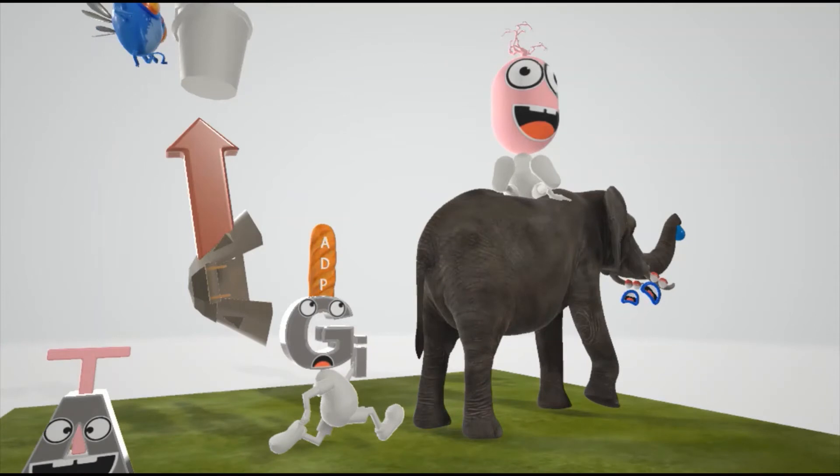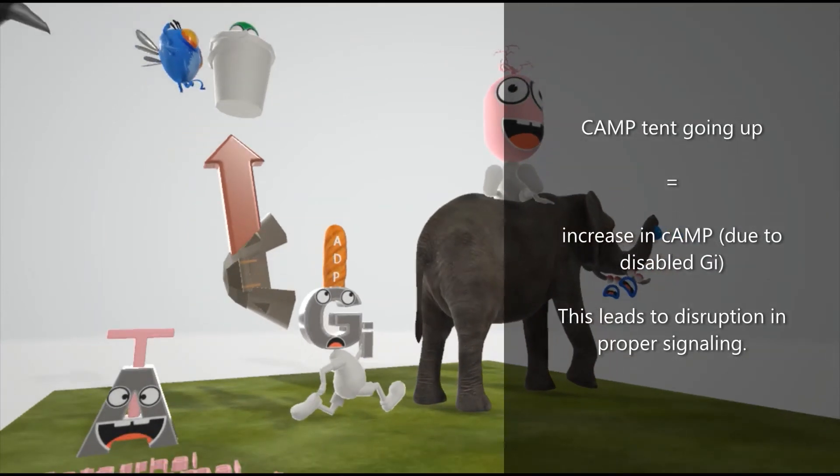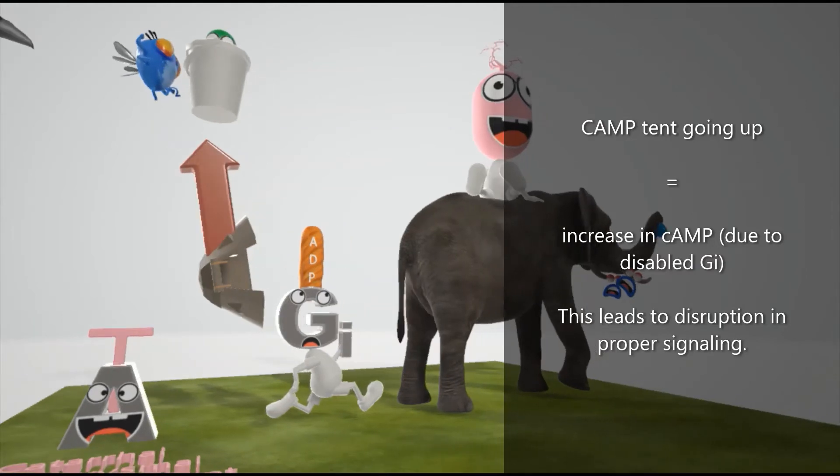So what happened was when he exploded, this CAMP tent went up. This CAMP tent went up, which helps us remember that there's an overproduction of CAMP after GI stops. And that's because the GI inhibitory protein prevents the conversion of ATP to CAMP. So if the GI protein is stopped, CAMP will go up.